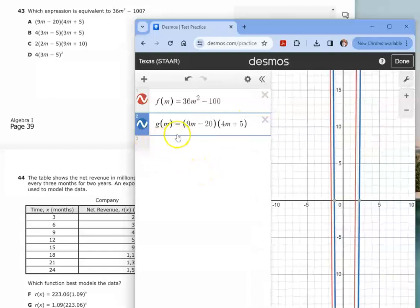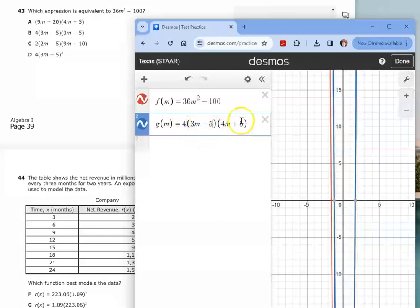So let's go to answer choice B. This one has a 4 in the front. And in the first set of parentheses, it has 3M minus 5. And in the second set, it has 3M plus 5. And again, this is a perfect fit. If you turn off the blue graph, you will see the red graph is under it and it's completely covering it. So the correct answer choice is B.